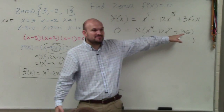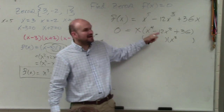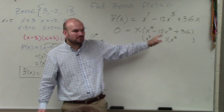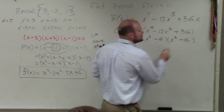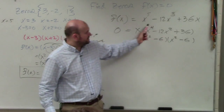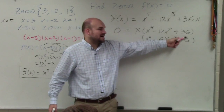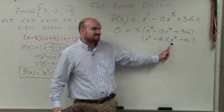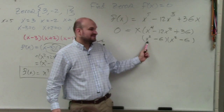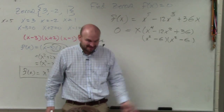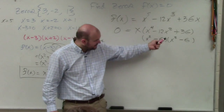Is 36 a perfect square? Yes. What two numbers multiply to give you 36 but also add to give you negative 12? Negative 6. And you can check your answer: x squared times x squared is x to the fourth; negative 6 times negative 6 is positive 36; negative 6x squared plus negative 6x squared is negative 12x squared.